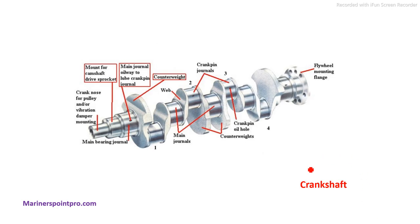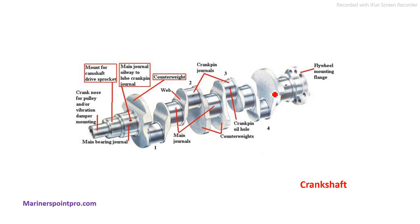Next we have the crankshaft diagram. The different parts are: the crank pin, main journal, lubrication holes for the main journal, counter weights, and crank webs. Note the difference between counter weights and webs — the webs are this portion of the crank, and the counter weights are added separately for balancing the crankshaft.